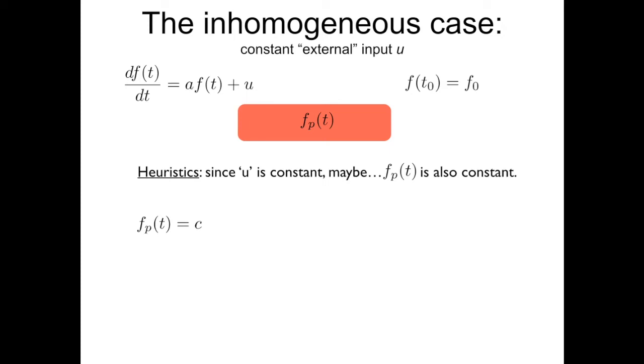I take this function, and I call it c. Note, I don't know which is the value of this function. I'm assuming that it exists. And I plug it here on the left-hand side. The derivative of this function is zero, because the function is a constant. And on the right-hand side, I write a times c plus u.